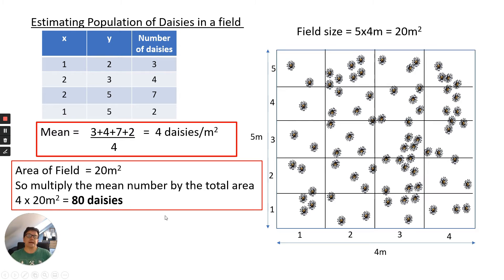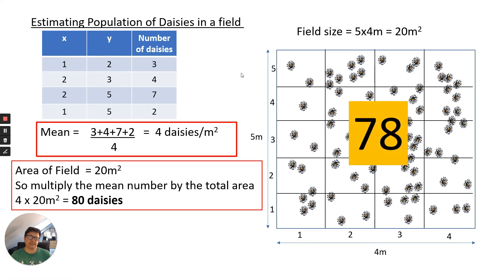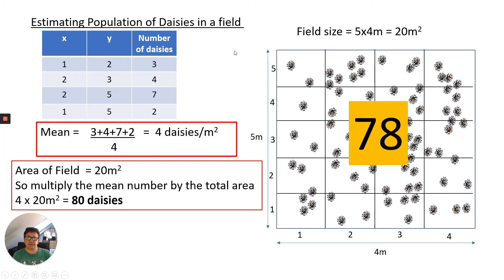The actual number of daisies in the field is 78, so our estimate from only four quadrats was pretty good. Obviously it depends on the variability of daisies across the field — you'd have to assume it's fairly uniform, with no shaded or drought areas. In practice, for a larger area you'd need many more quadrats to get a reliable estimate.